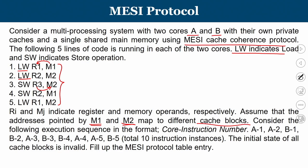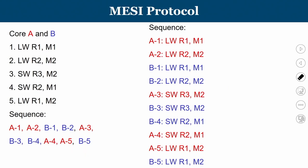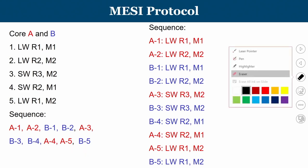Consider the following execution sequence. When we look at the serialization, the sequential order is A1, A2, B1, B2, A3, B3, B4, A4, A5, B5 — where A1 means the first instruction of core A and so on. I am using red color for core A and blue color for core B. We need to track M1 and M2 — R1 is not a concern for coherence. Both processors A and B try to access M1 and M2 across this sequence.